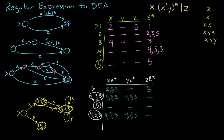Let's double check by verifying our list of accepted strings. Just Z: at state one follow Z, go to five — accepted. Just X: follow X, go to accepting state two, three, five — good. X X: follow X then X — yes, that's good. X Y X: follow X, Y, X — perfect. X Y Y: follow X, Y, Y — perfect as well. All of those work. That's how you convert a regular expression to a DFA: make a chart with all the information from the NFA, convert that into a chart for the DFA, and then you are done.